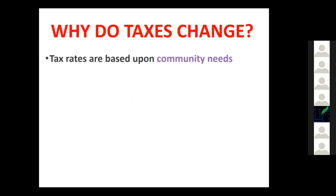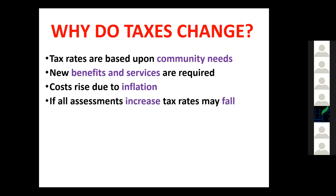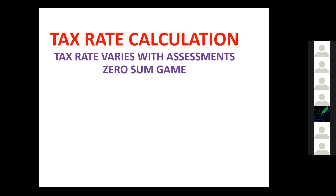Tax rates are based upon community needs — new benefits, services, and rising costs due to inflation. If all assessments increase, tax rates may fall. In this Greenwich revaluation, most assessments are decreasing, so the tax rates would have to increase to make up the loss. To calculate the tax rate: revenue needed in Greenwich in 2010 was $300 million. The 2009 assessments totaled $35 billion, giving an old mill rate of 8.57 — less than 1%. With new assessments down to $30 billion, dividing $300 million by $30 billion gives a new tax rate of 10 mills.